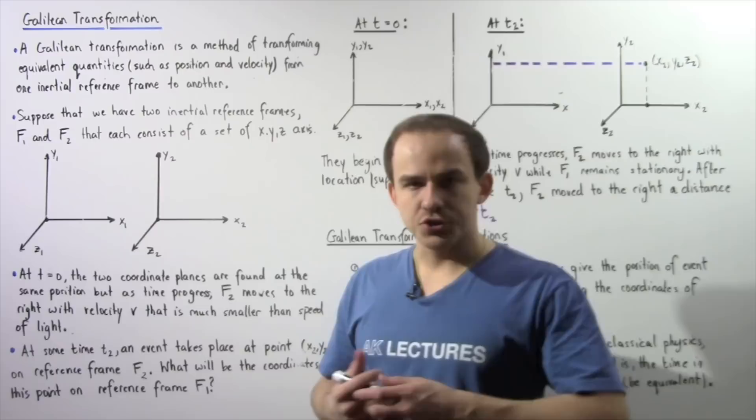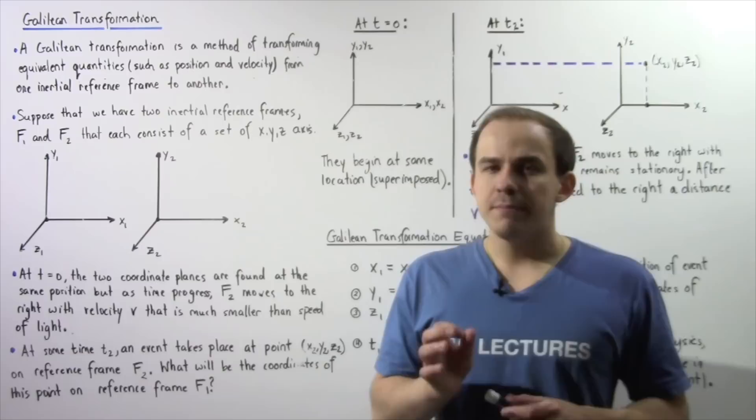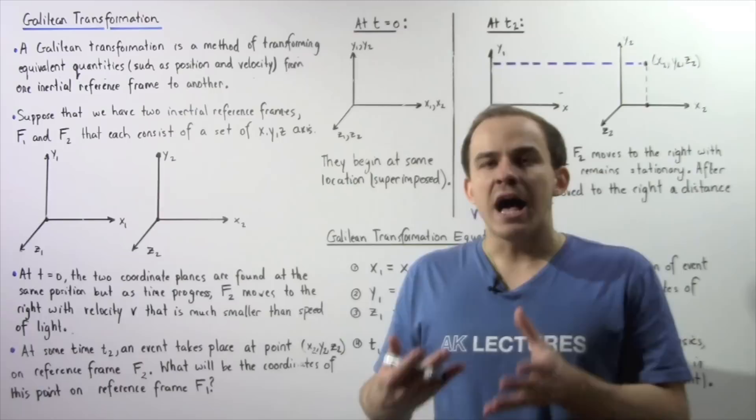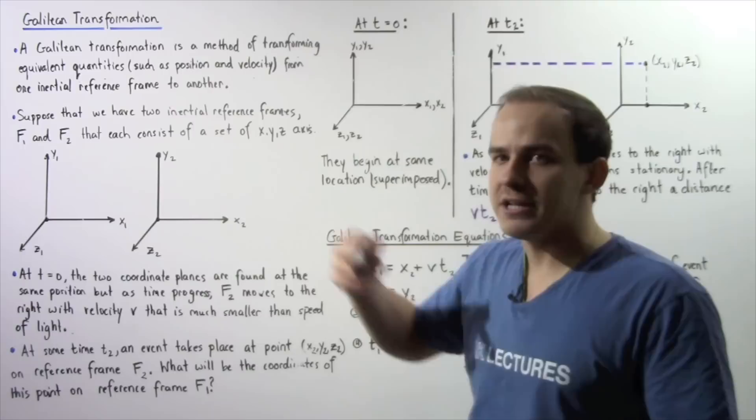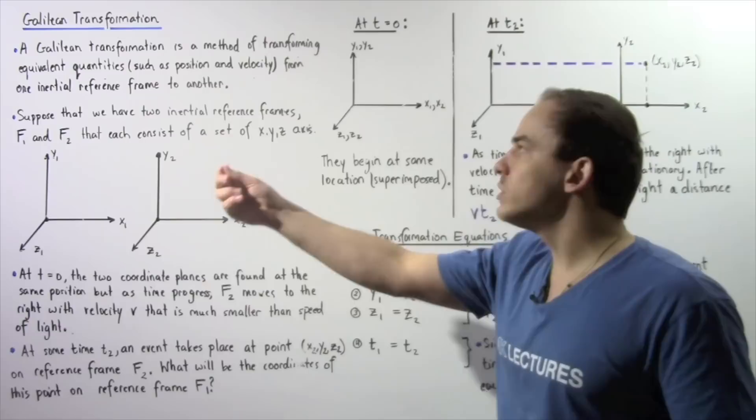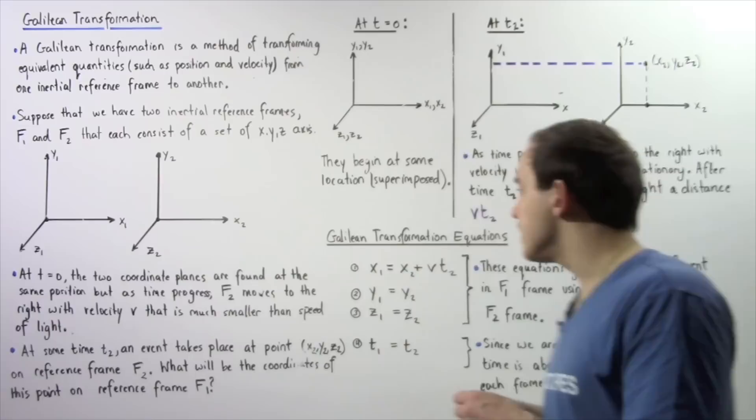In classical physics, a lot of the time we deal with two or more reference frames. So it becomes very important to be able to transform quantities that describe an object or an event from one reference frame to a second different reference frame. These types of transformations are known as Galilean transformations — a mathematical method of transforming a quantity from one inertial frame to a second different inertial frame.